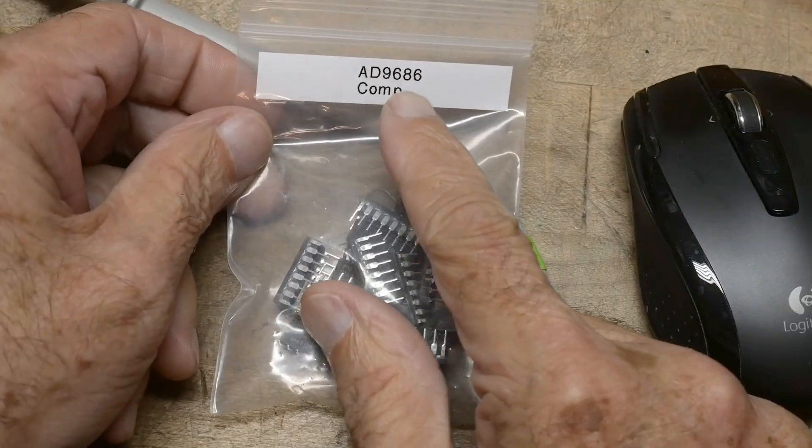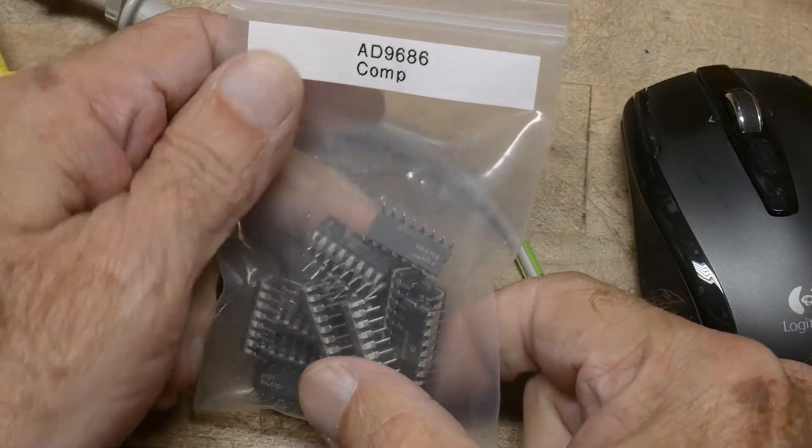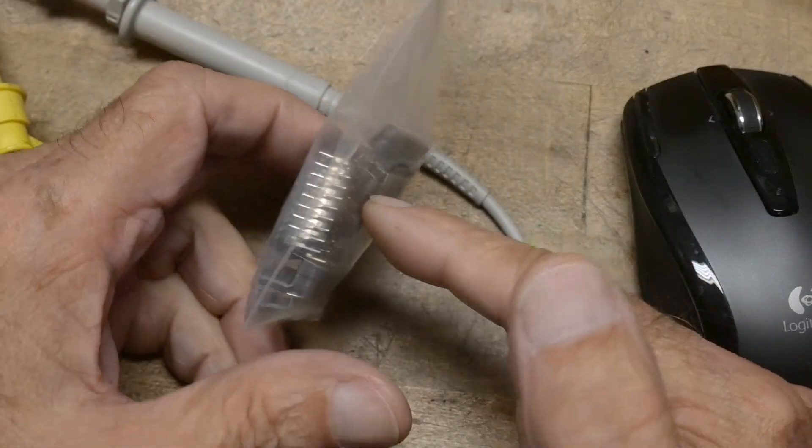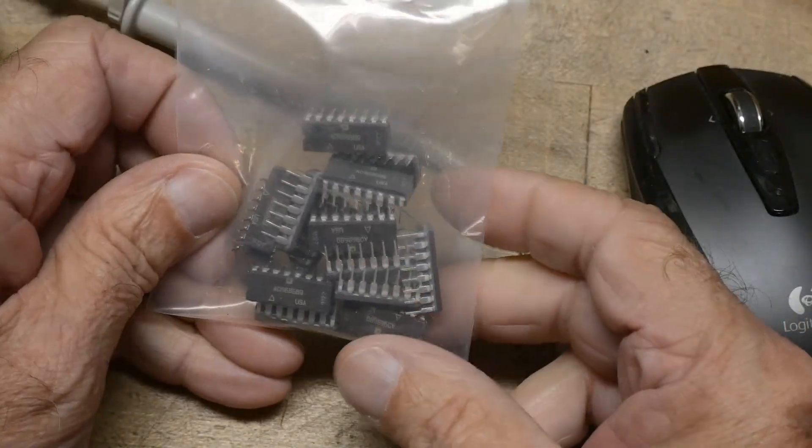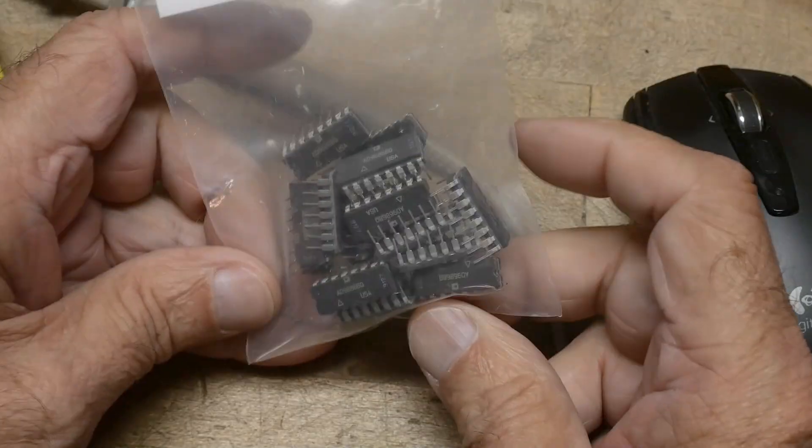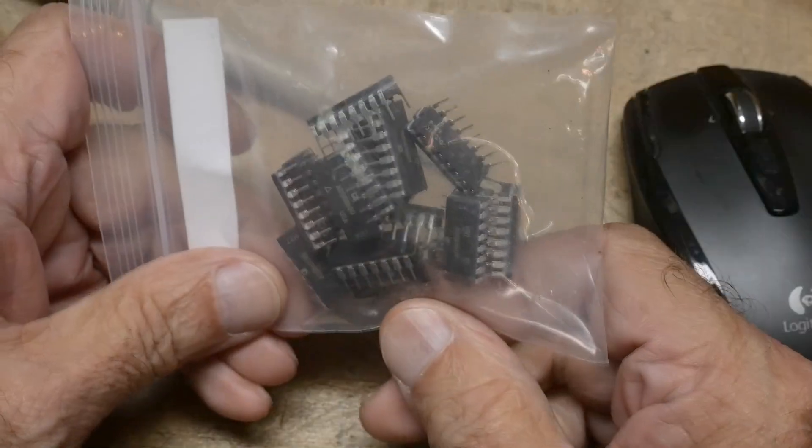We have an AD9686 comparator. I had to look it up. I didn't know what they were, but I did know I had a big bag of them. I don't know where they came from. They just magically were in one of my drawers, probably from some estate.